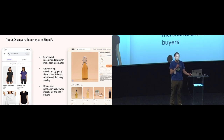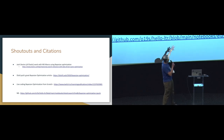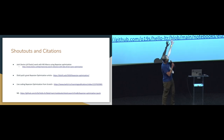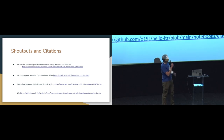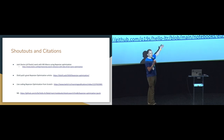Of course, like every company, we're hiring. Shoutouts and citations — I put this up front. I learned a lot from these blog articles. Josh Devins at Elastic does this with MS Marco — at one point it was the top non-neural MS Marco performing solution. There's also a great article on Bayesian optimization I really recommend. And if you want to see live coding and concrete examples using more open datasets, I've put those links here in the open source connections Hello LTR repo.